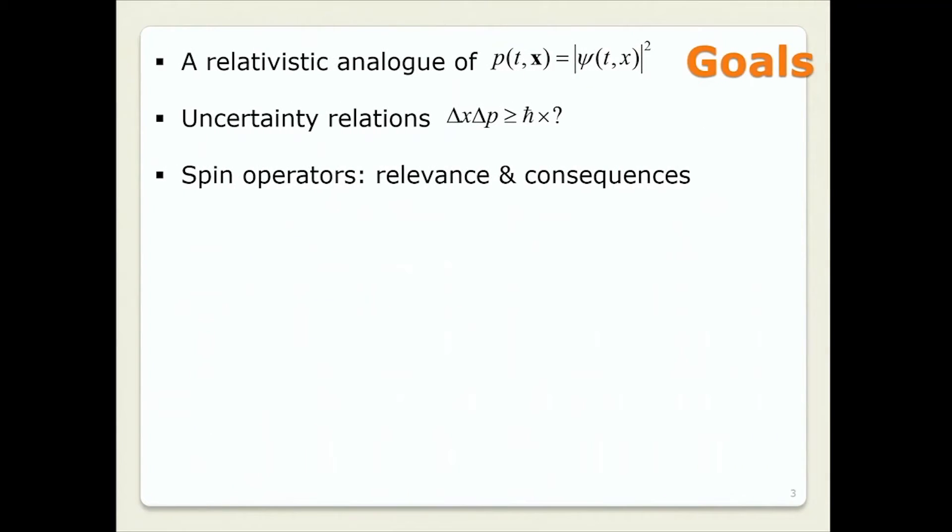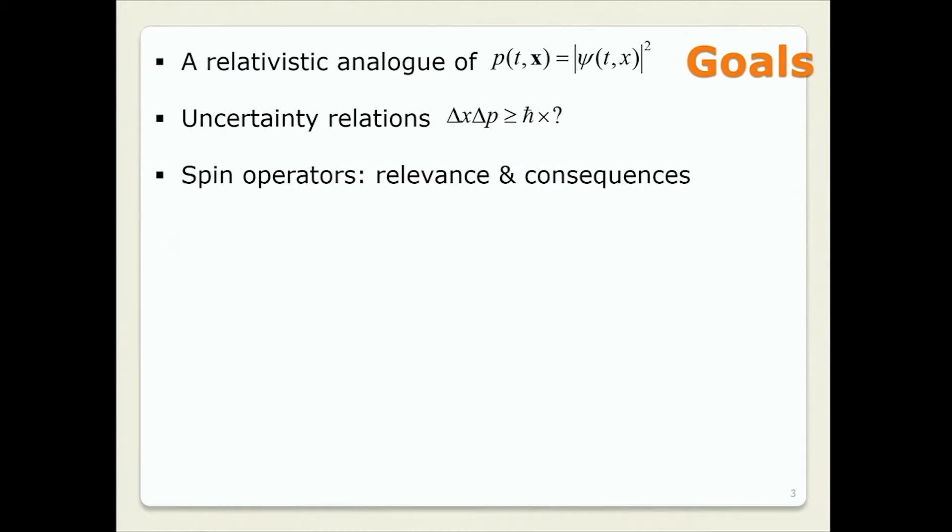So we have three goals. I'd like to have a relativistic analog of non-relativistic probability density psi squared. I think I understand it reasonably well for photons. Now I would like to have the same thing for fermions. Immediately related question, what are the uncertainty relations? How close can we go to delta x, delta p, whatever defined relative to h bar?